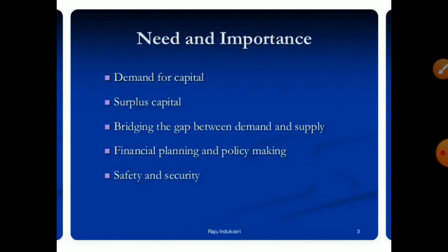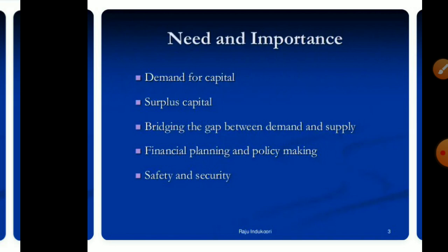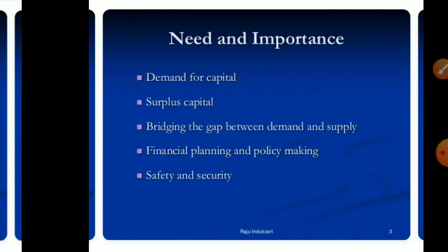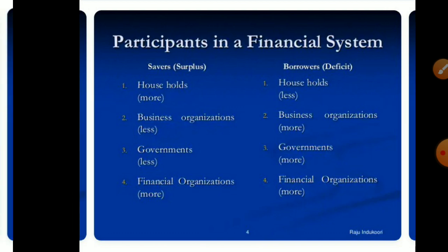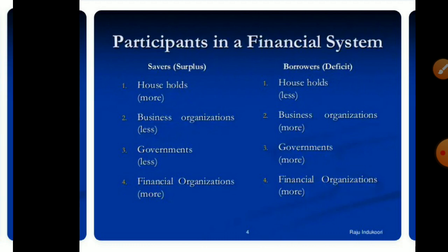Important functions include bridging the gap between demand and supply, financial planning and policy, and market operations. There is also a security system for lenders and borrowers. Participants in a financial system include households, business organizations, governments, and financial organizations.